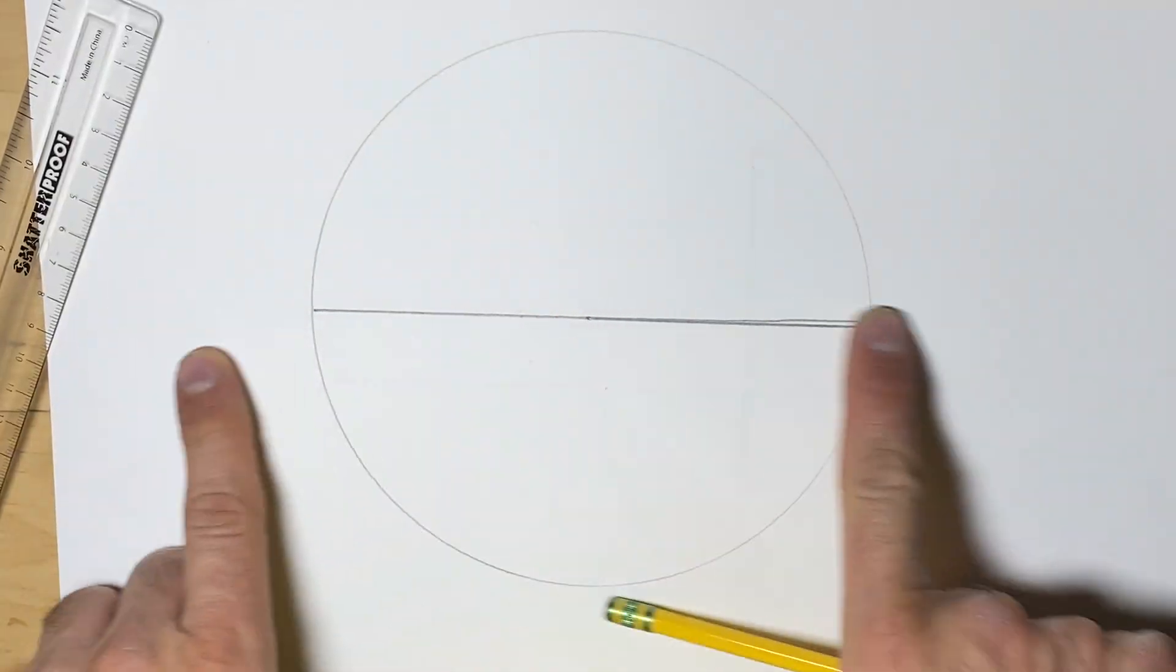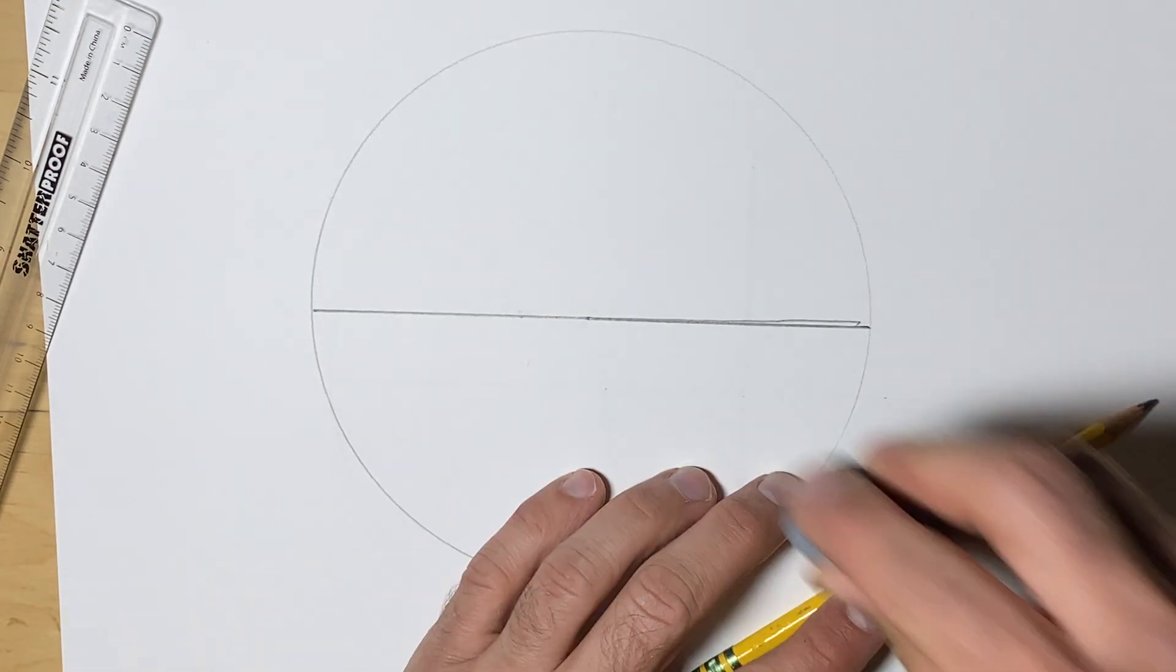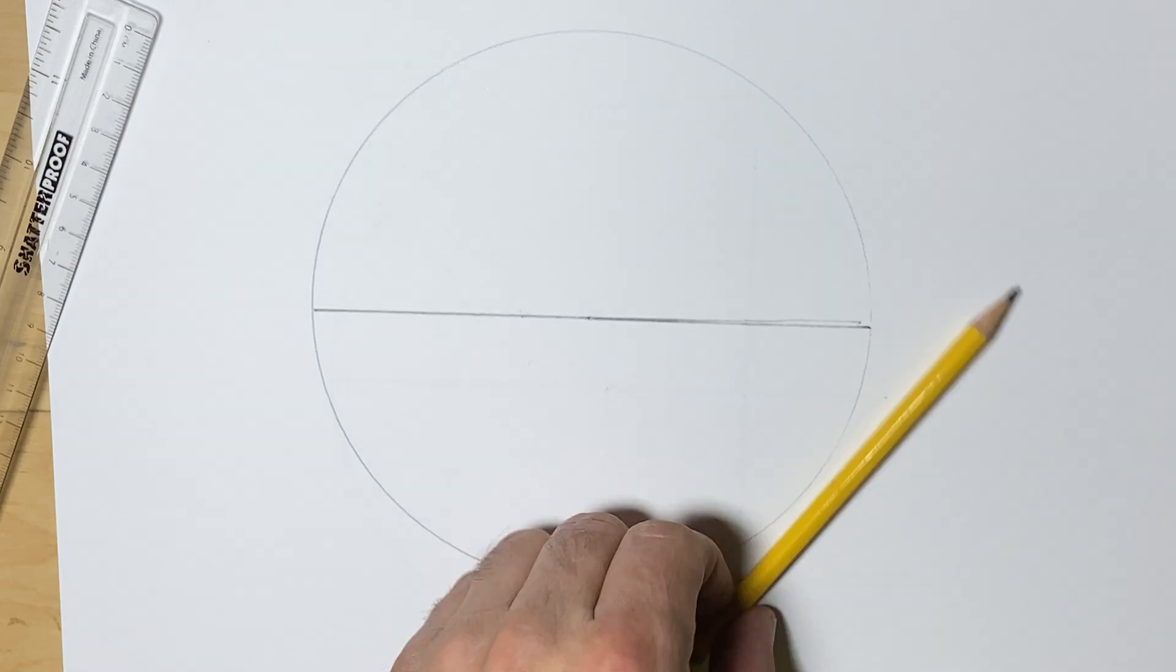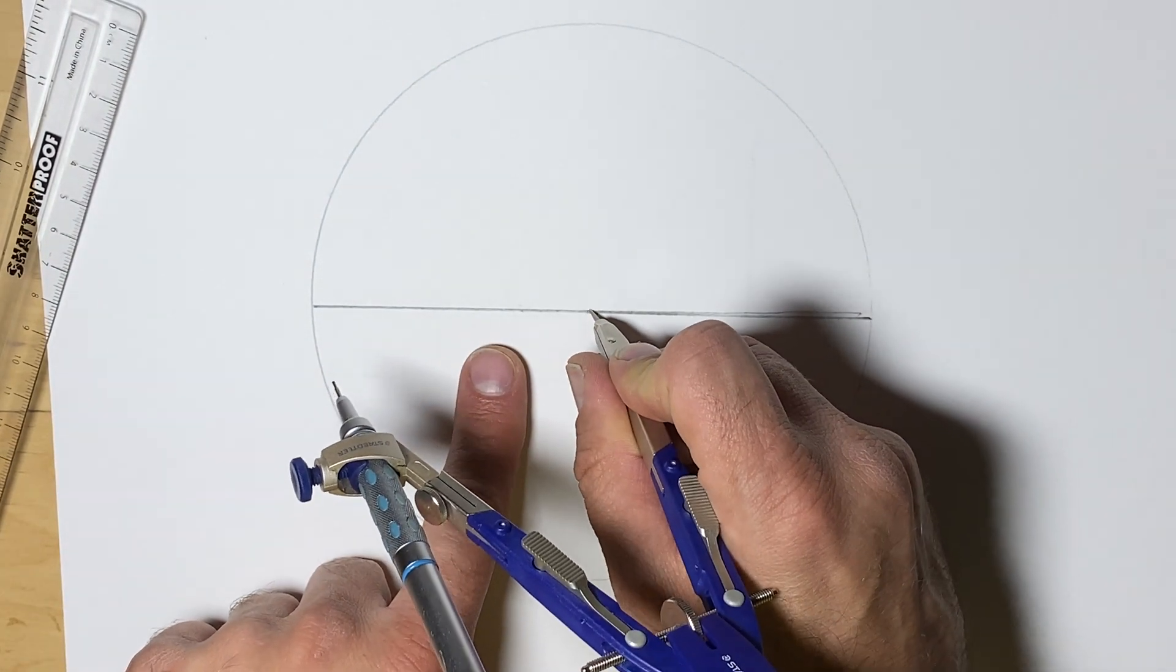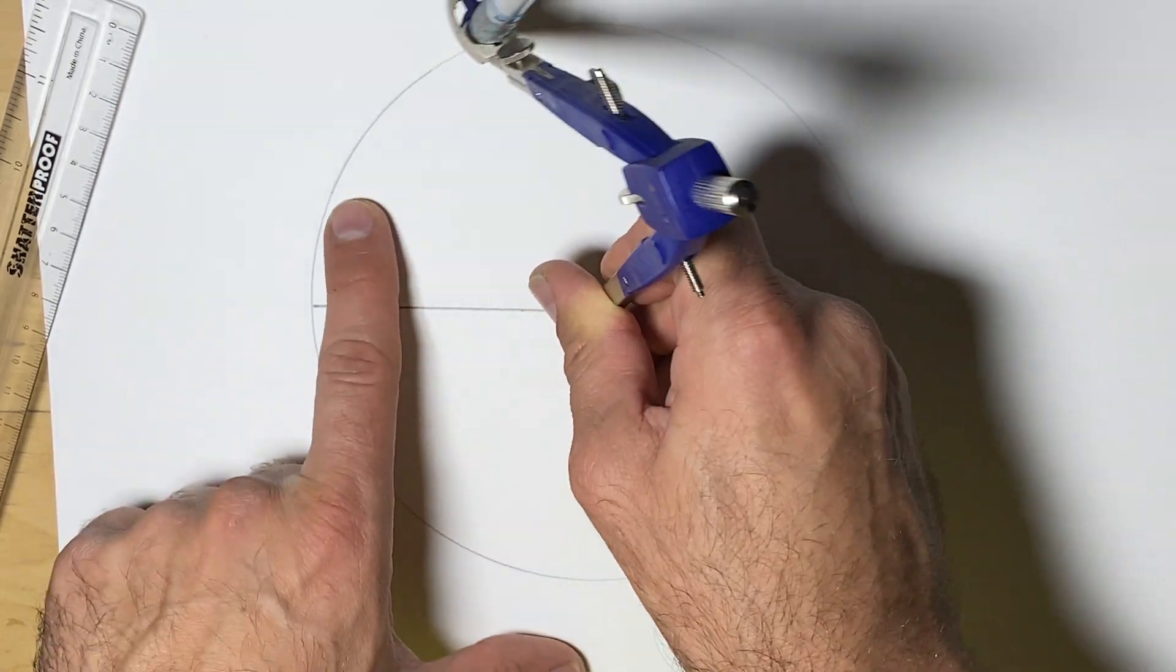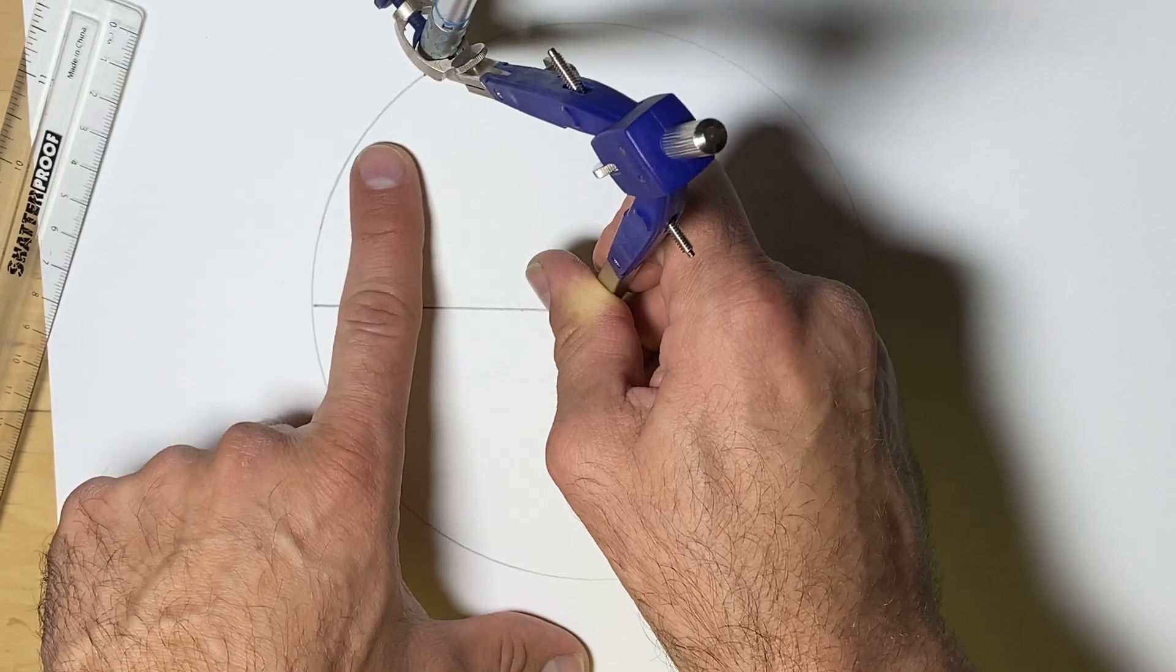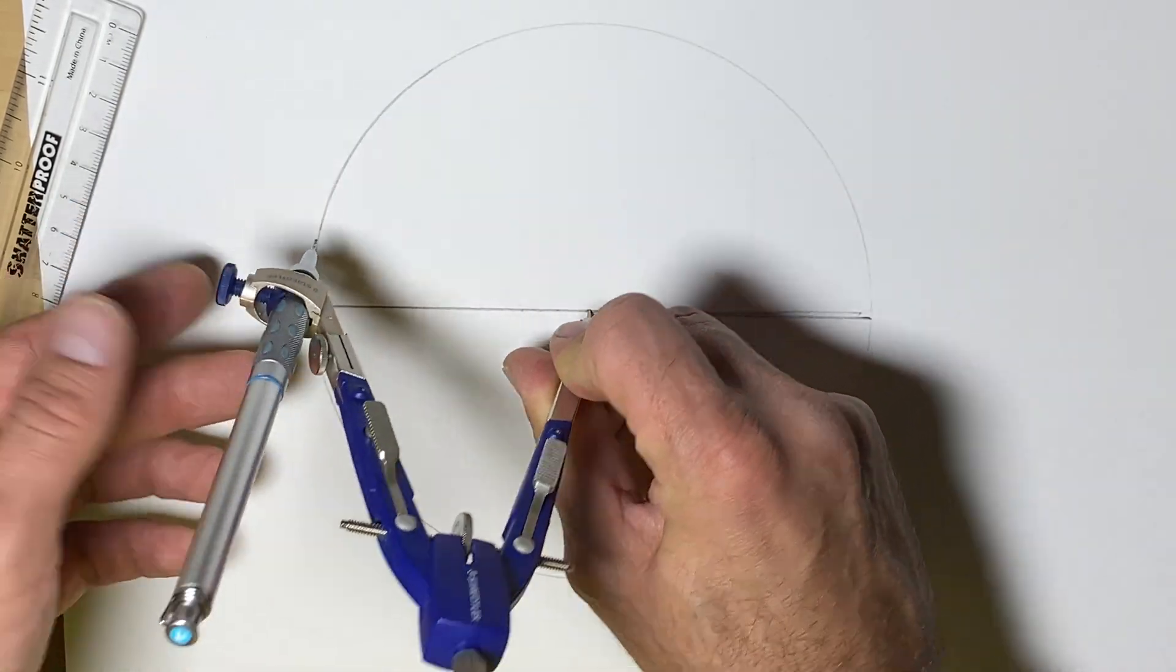My ruler moved up a bit. So this is my original line here and we call this the diameter. The diameter is cutting a circle in half. Then, checking to make sure my compass is still lined up properly and didn't move, it is lined up to the original circle.